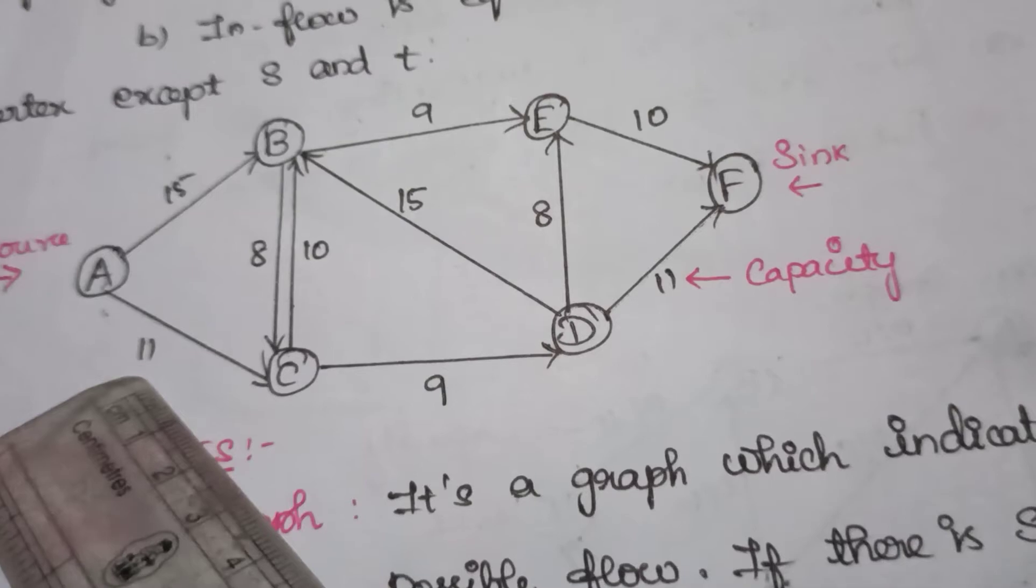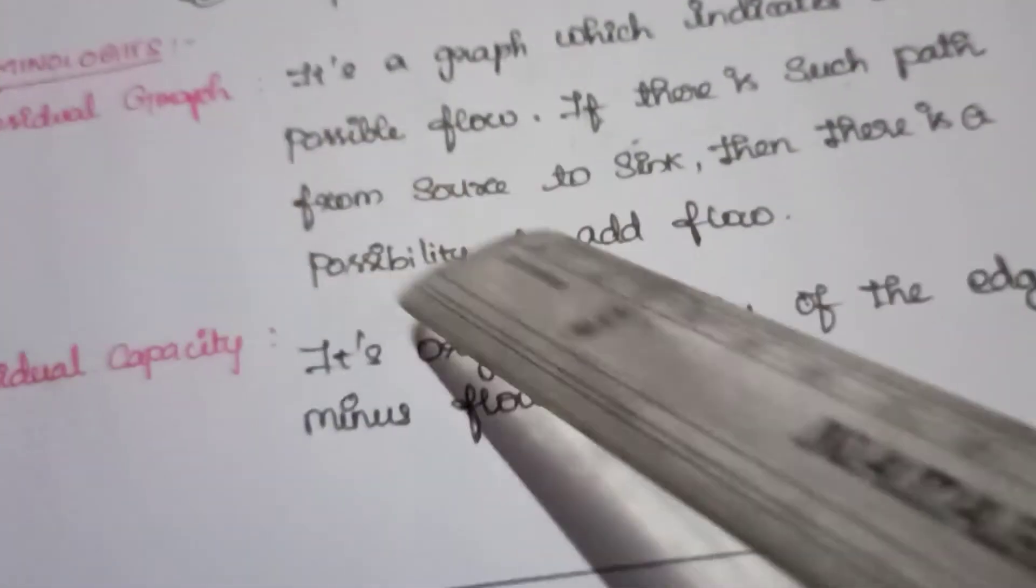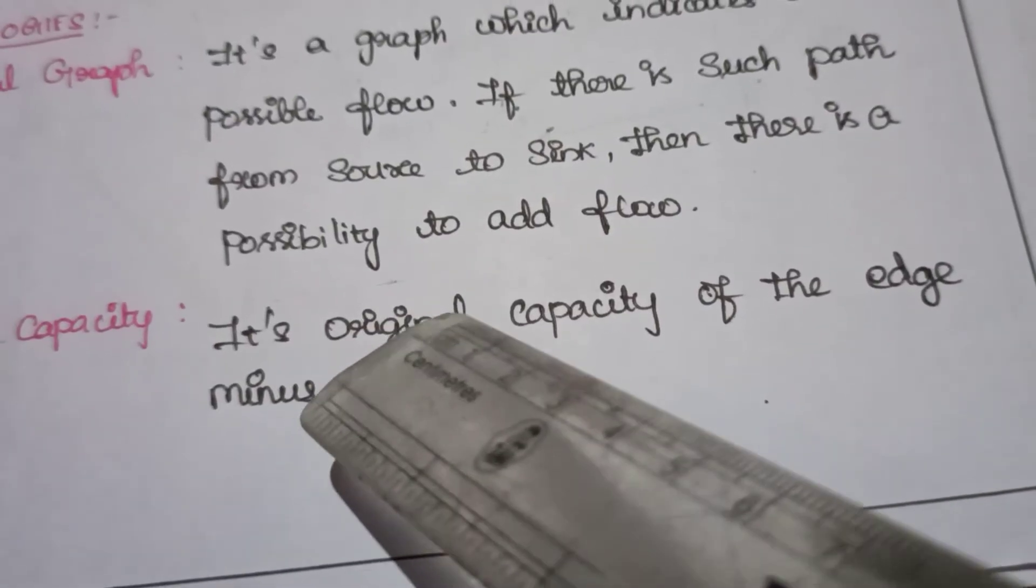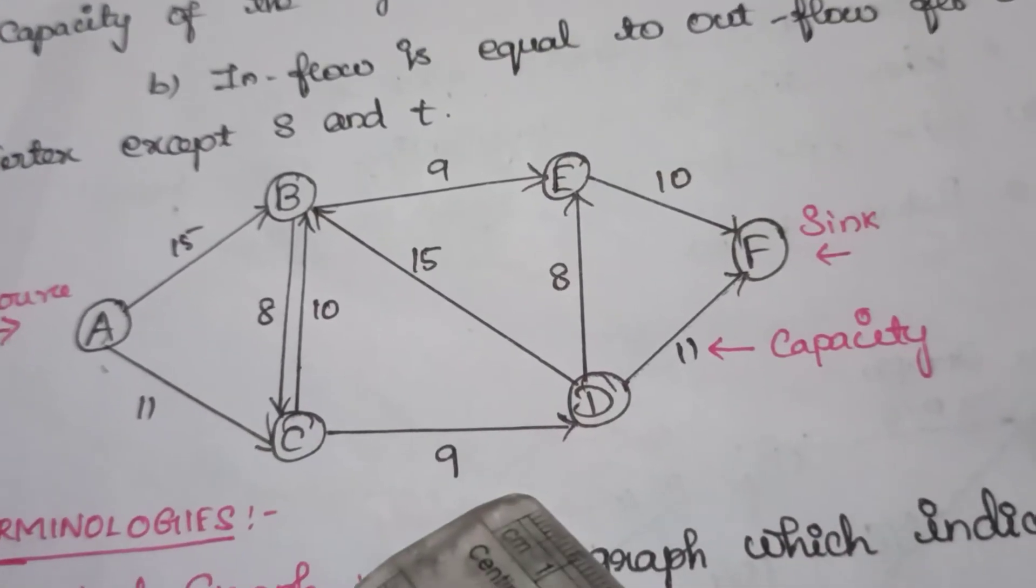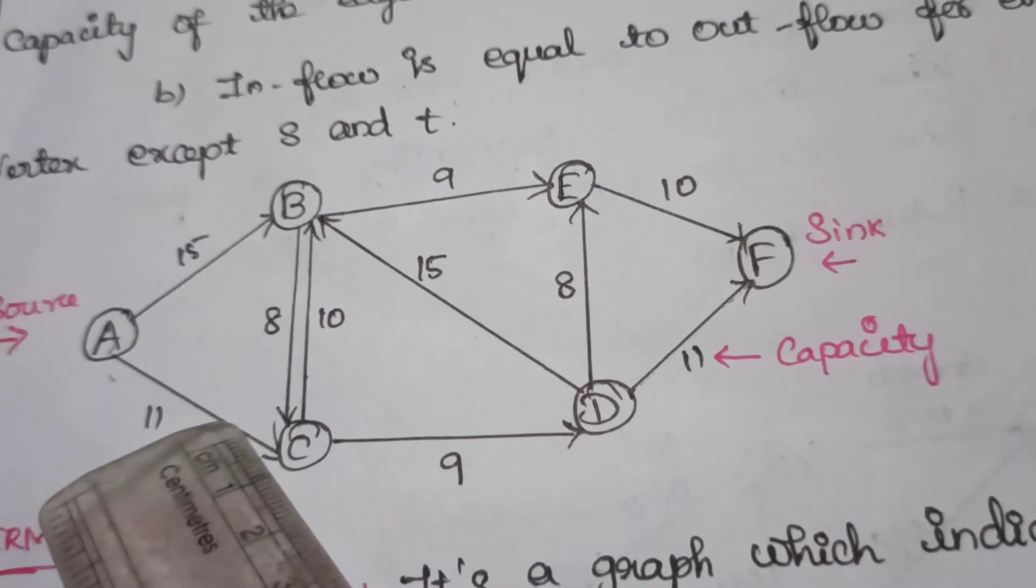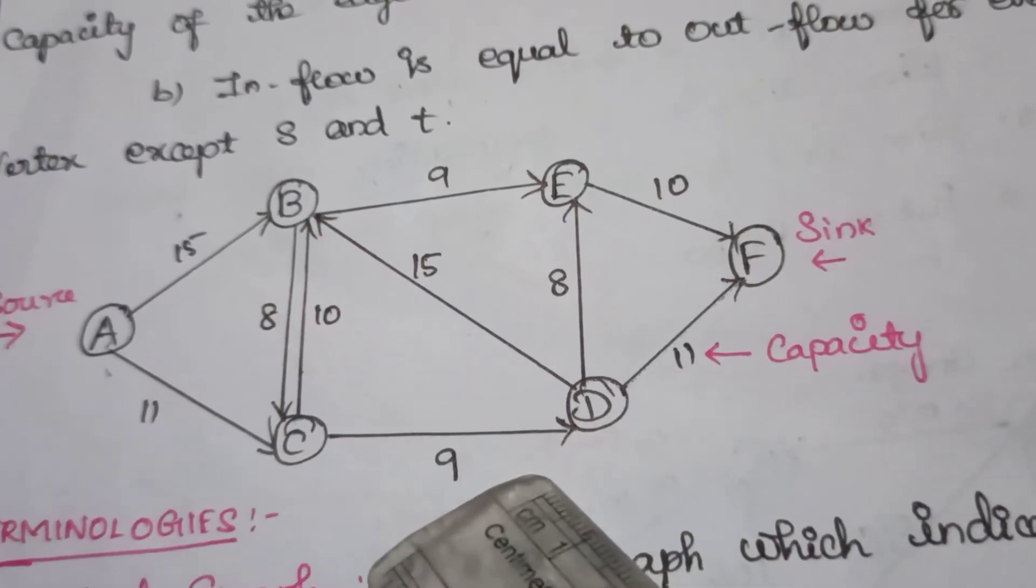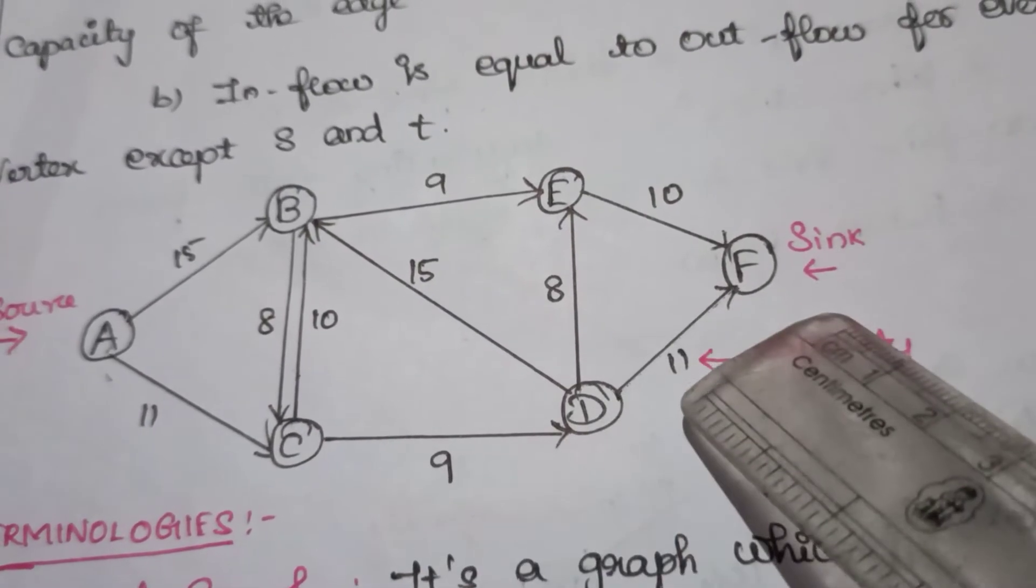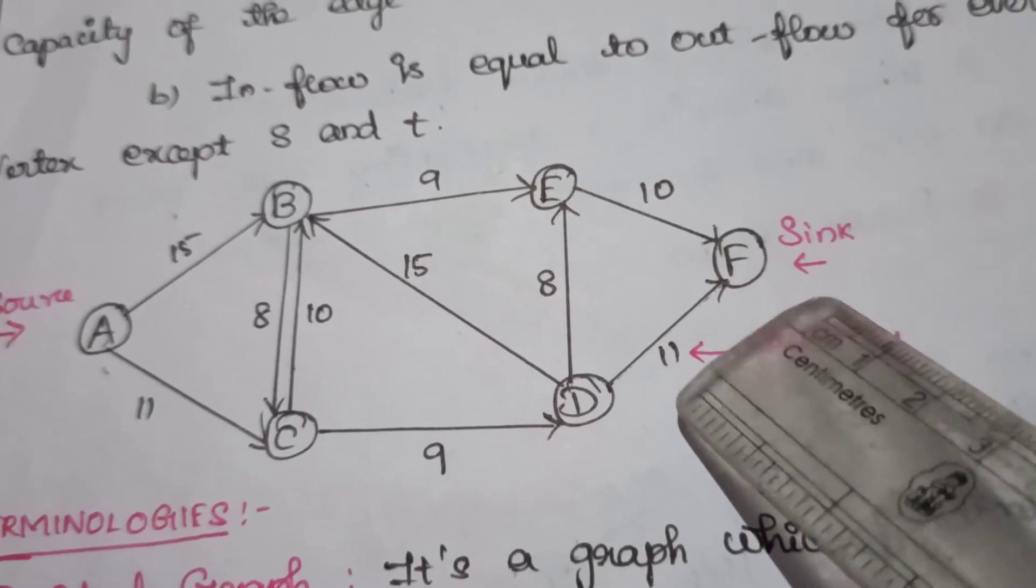To get the residual capacity, you have to subtract the flow from the original capacity. So here, original capacity is 11 and the minimum flow is 9. So 11 minus 9, we get 2. C to D, we get 9 minus 9 equals 0. And D to F, the residual capacity is 11 minus 9, which is 2.